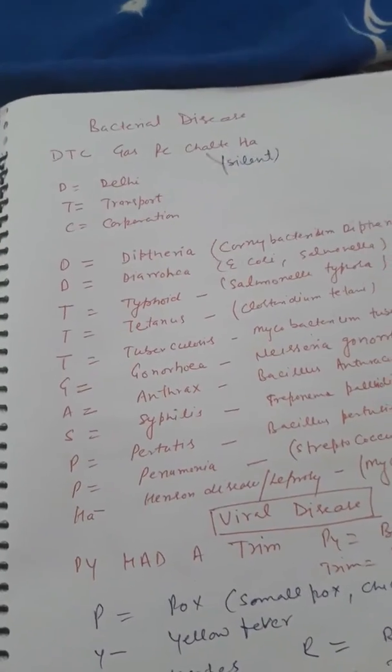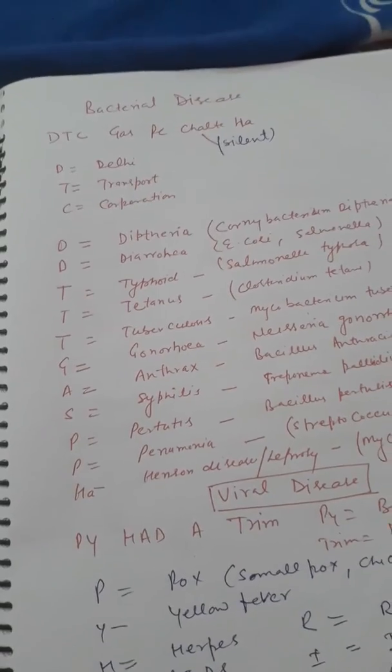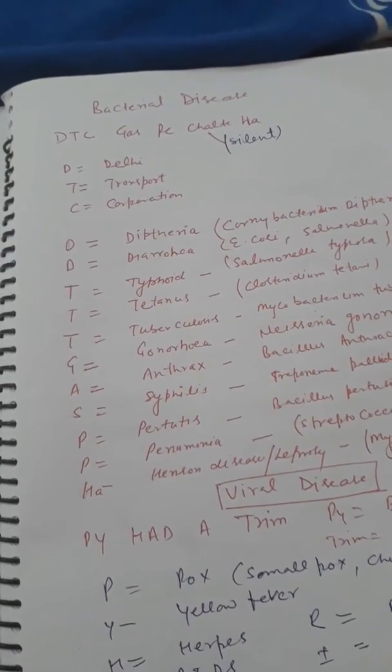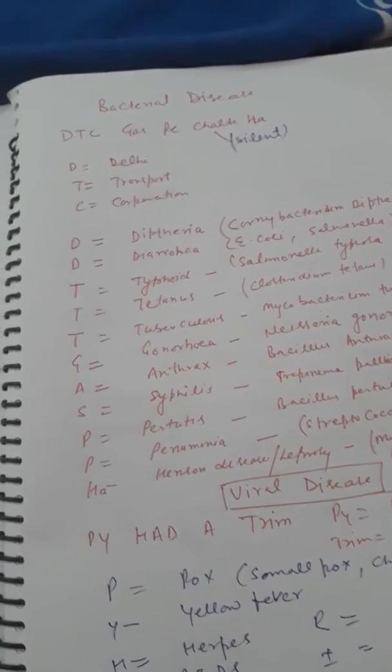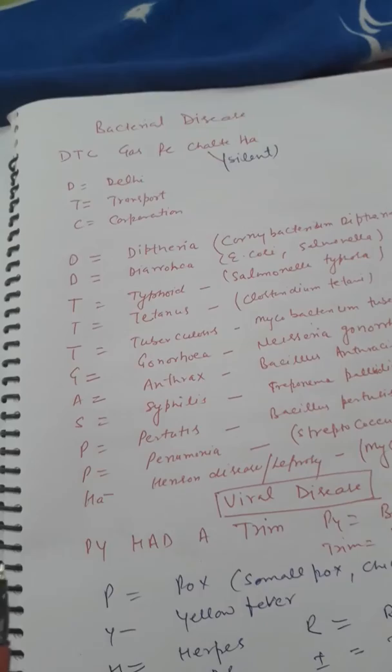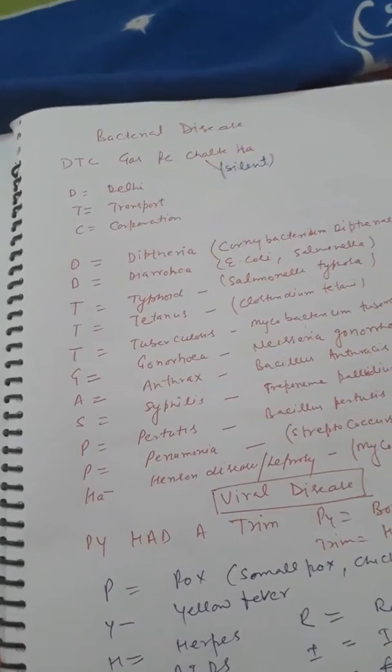Friends, how are you? Today I am telling you about different types of diseases which are caused by bacteria, virus, fungus and protozoans. So first of all, I will tell you tricks.